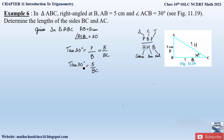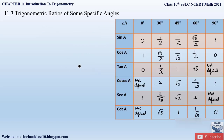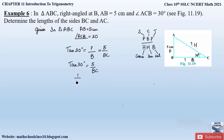We need to remember trigonometric ratios for specific angles: 0°, 30°, 45°, 60°, and 90°. Going back to the table, the value of tan 30° is 1/√3. So we write: 1/√3 = 5/BC. Cross multiplying gives BC × 1 = 5 × √3.